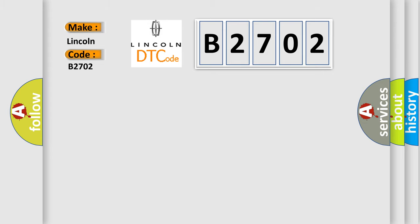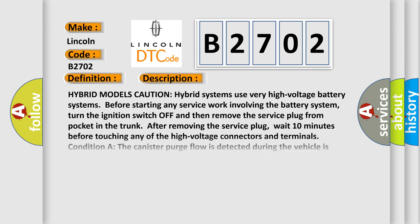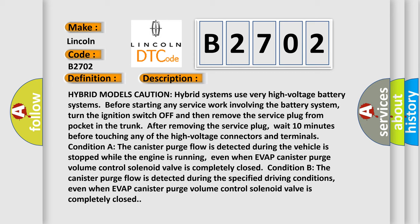The basic definition is: EVAP canister purge volume control solenoid valve, including hybrid models. Caution — hybrid systems use very high voltage battery systems. Before starting any service work involving the battery system, turn the ignition switch off and remove the service plug from the pocket in the trunk. After removing the service plug, wait 10 minutes before touching any of the high voltage connectors and terminals. Condition A: the canister purge flow is detected while the vehicle is stopped and the engine is running, even when the EVAP canister purge volume control solenoid valve is completely closed.